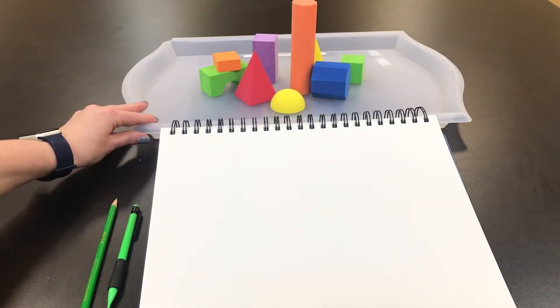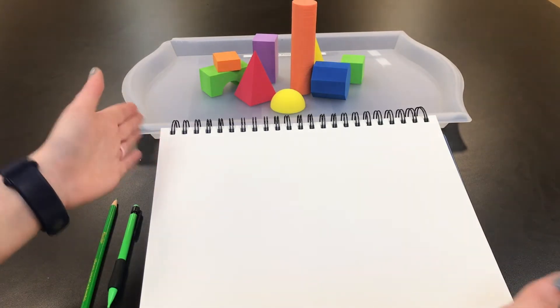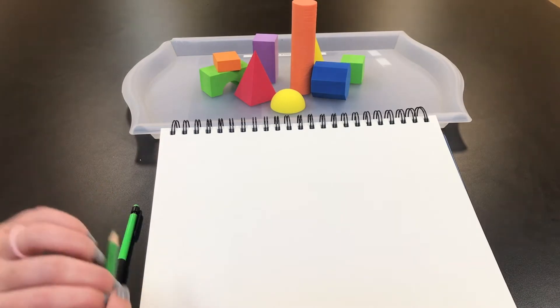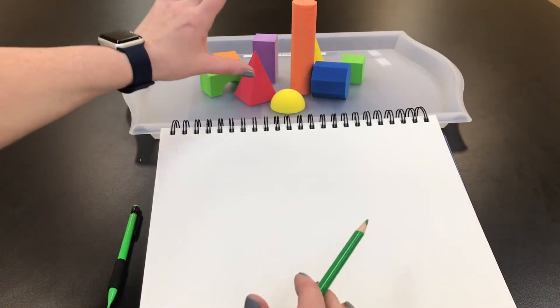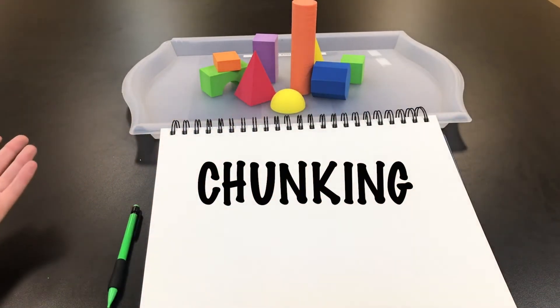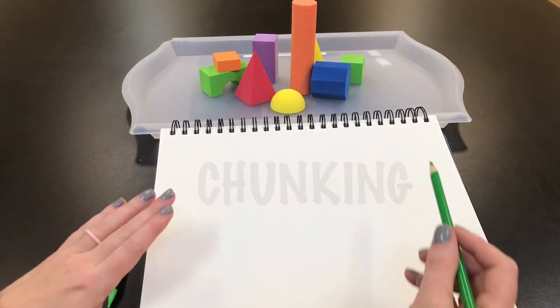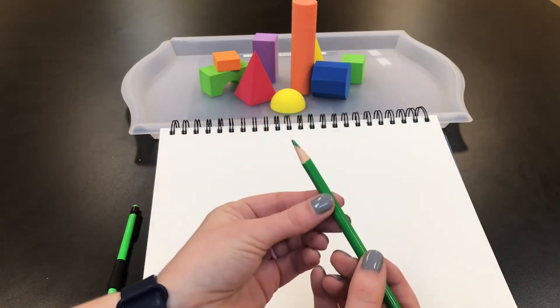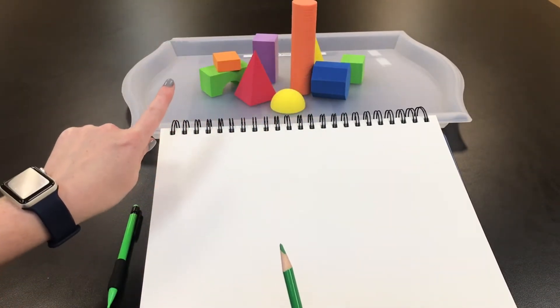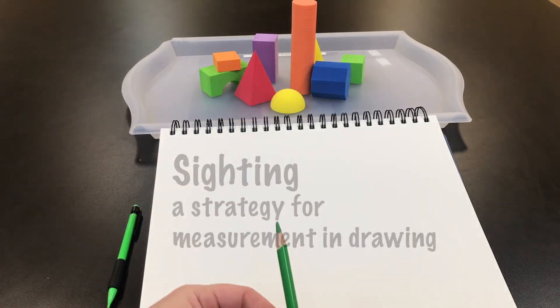The first thing I'm going to do now that I've established what direction my sketchbook is going to be is to figure out how can I fit every object on my page. I'll tell you how with chunking. I'm going to use my pencil and my eyesight to help me figure out the proportions of these items. This technique is called sighting.